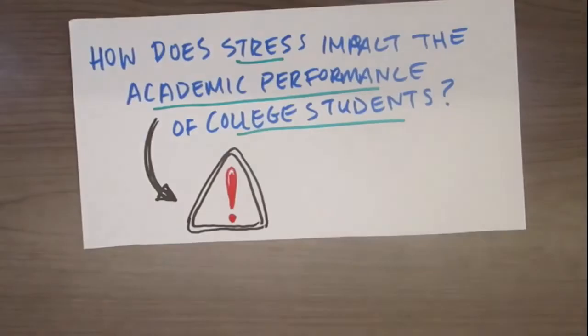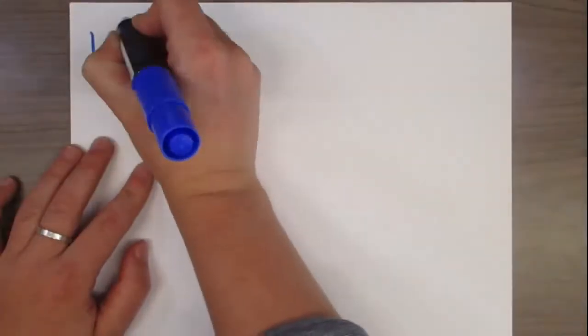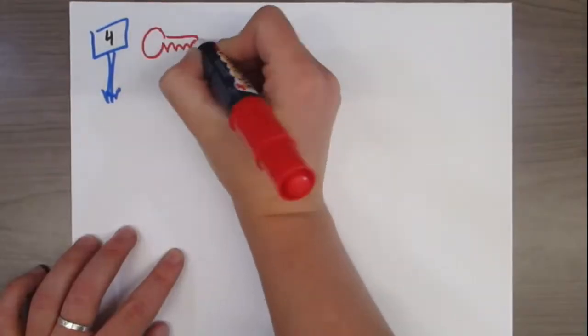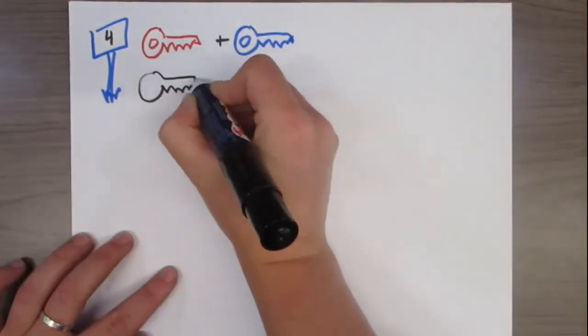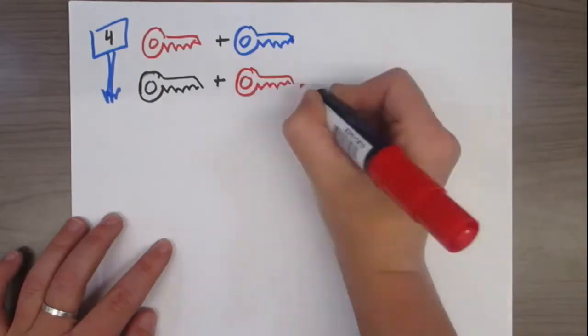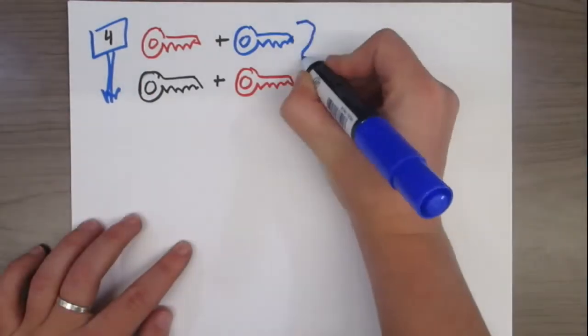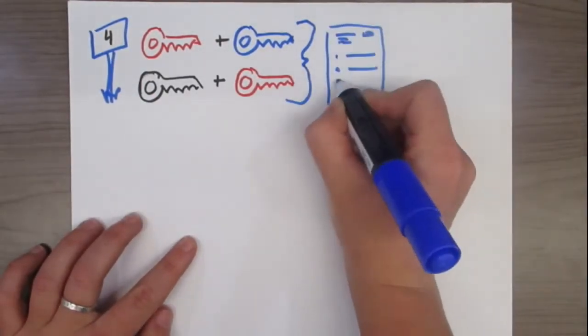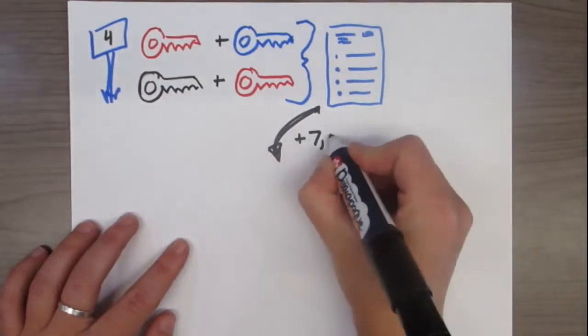Keywords are the important ideas within your research question. As you start searching in library catalogs or a library database, try different combinations of keywords to improve your results. If you're getting too many results, try adding another keyword. Too few? Try making your keywords broader.